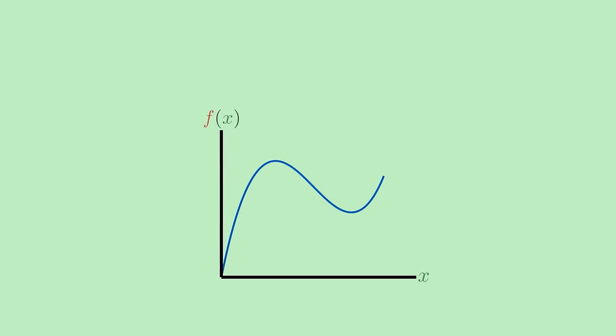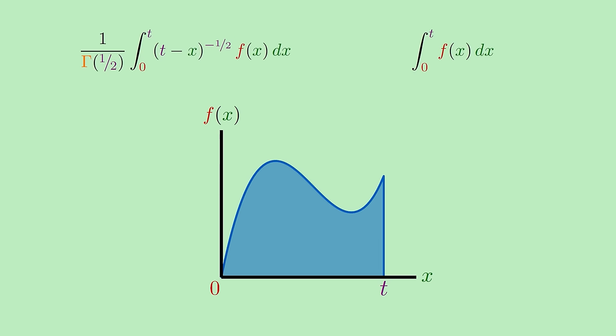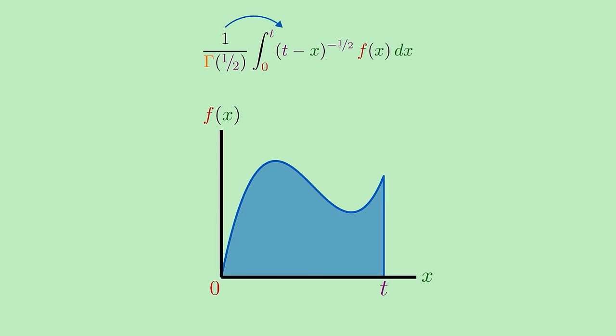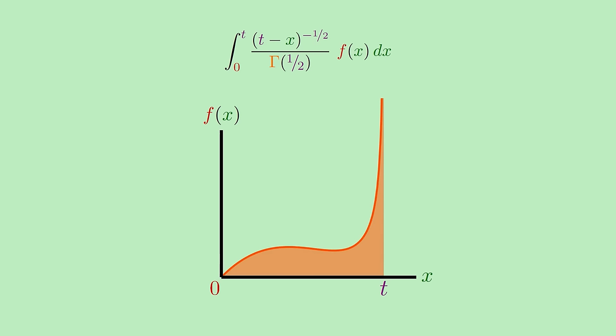Start with the graph of some function f of x. We know the area under the graph from, say, x equals 0 to x equals t represents the integral of f of x from 0 to t. The idea is then to interpret the formula for a fractional integral, like this one for a half integral, as transforming the shape of the area under this curve. One way to do that is to pull the 1 over gamma factor inside the integral, and view the new integral you get as scaling the height of the graph at each point by some factor dependent on x and t, where that scale factor is given by this piece of the integrand, which I'll call mu t.